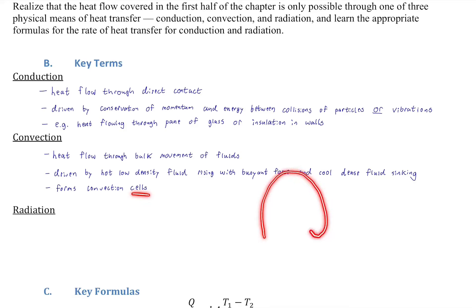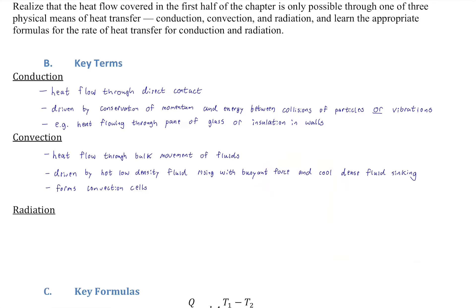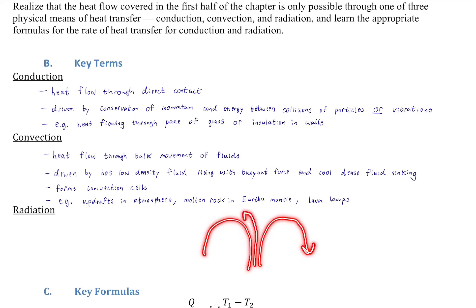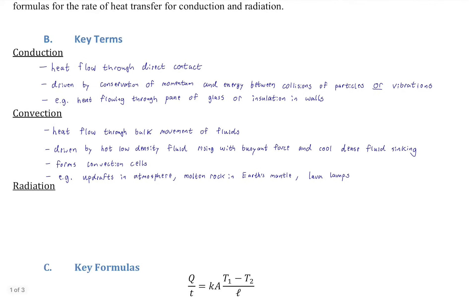A convection cell can be massive — on the scale of cities for air. This includes atmospheric updrafts and downdrafts. Convection is also very important in Earth's mantle with molten rock. Lava lamps are a great visible example: you can see hot pockets rising, cooling at the top, and sinking back down — that's the bulk movement of fluids.